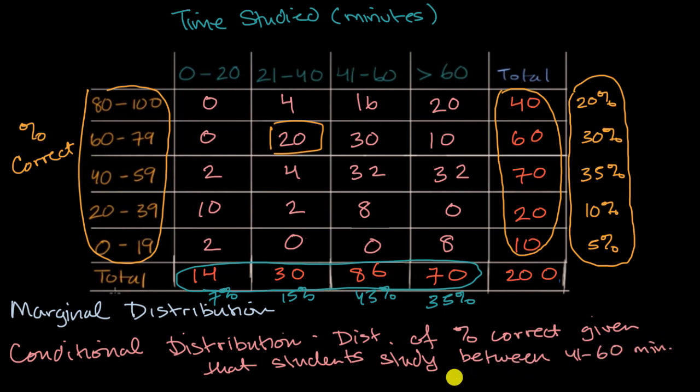Well, to think about that, you would first look at your condition. Okay, let's look at the students who have studied between 41 and 60 minutes. And so that would be this column right over here. And then that column, the information in it, can give you your conditional distribution.